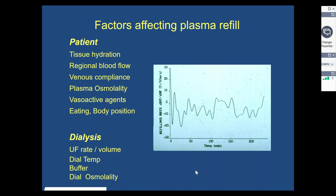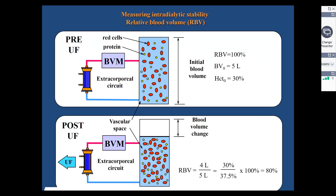If we knew the refilling rate, it would be easy to prescribe ultrafiltration to match that refilling rate from the interstitial to the blood compartment. However, there are many factors that could affect plasma refilling — even changes in posture, eating, and body position. Studies looking at refilling rate show it's pretty much unpredictable, with no clear pattern and a huge amount of dynamic change during dialysis. This makes the process of prescribing ultrafiltration rather tricky and complex.